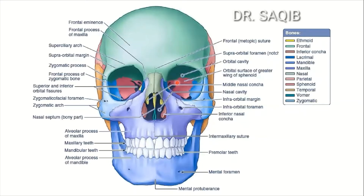You can see the lacrimal bone right over here, and beyond that in yellow is the ethmoid bone. Then the lacrimal bone is also visible in the nasal cavity. The vomer is visible in green, and on the lateral aspect the sphenoid is also visible, as well as parts of the temporal bone in the Norma Frontalis.